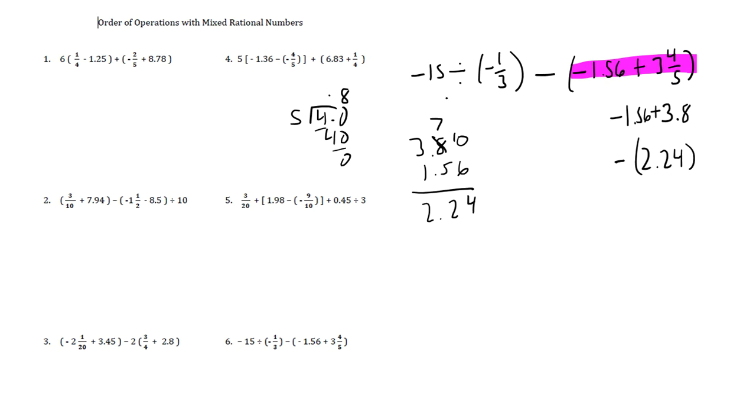Then we have a subtraction. Let me clear off some of this other stuff here so I have some space. Then we have a negative 15 divided by a negative one third. So before we can do this subtraction right here, we need to take care of doing this division.